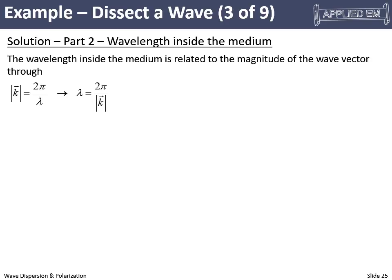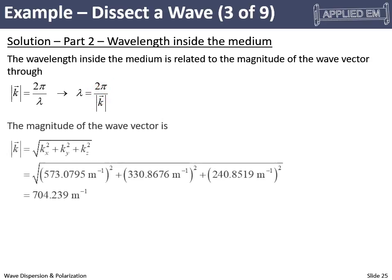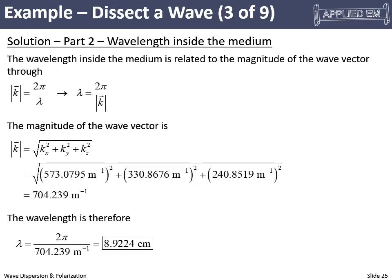To find the wavelength inside the medium, we use lambda = 2π divided by the magnitude of the wave vector. Calculating the magnitude gives approximately 704 inverse meters, and 2π divided by that gives 8.9224 centimeters — about 9 centimeters. This is the wavelength inside whatever medium the wave is propagating through, not the free space wavelength.